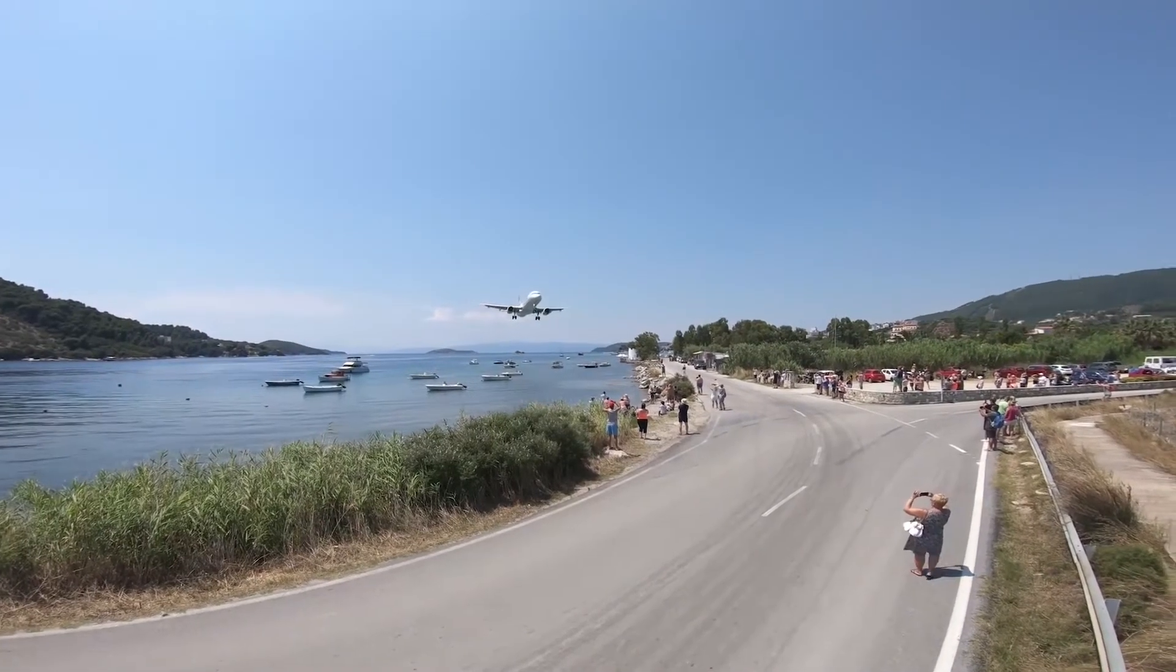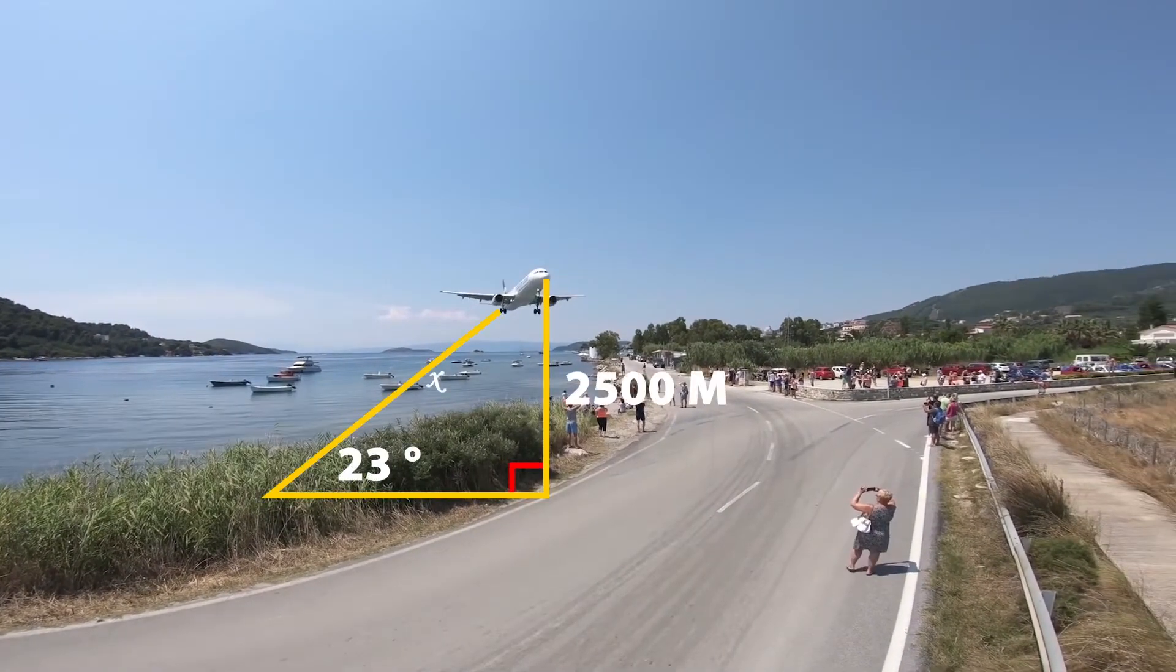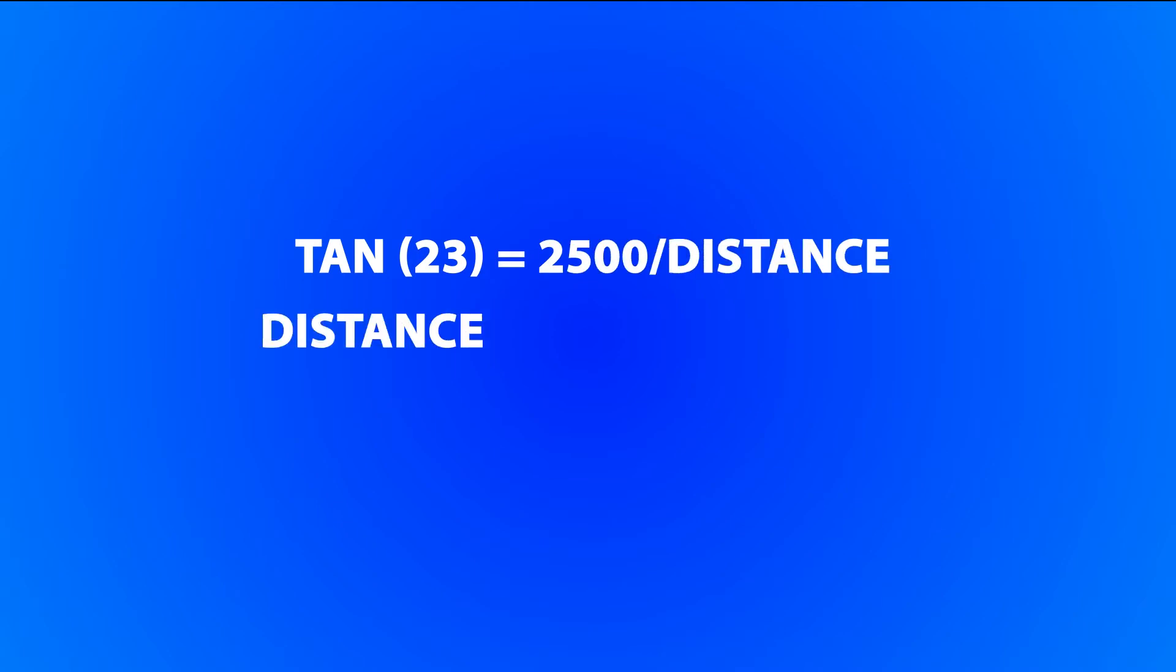Let's check one more example. Here, we will try to calculate how far the plane is away from the land. Again, we will see tan 23 equals 2500 divided by distance. And distance is equal to 2500 divided by tan 23, that is 5889 meters.